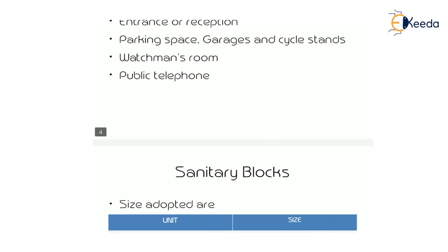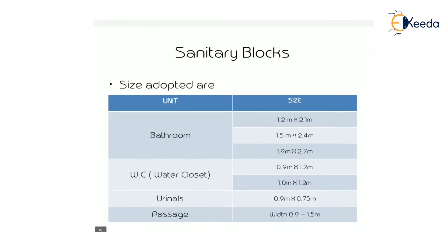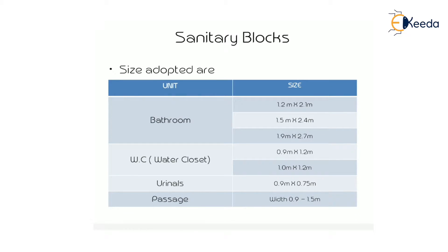The units of sanitary blocks are: bathroom, WC (water closet), urinals, and passage. The size for a bathroom is 1.2m × 2.1m, or 1.5m × 2.4m, or 1.9m × 2.7m.